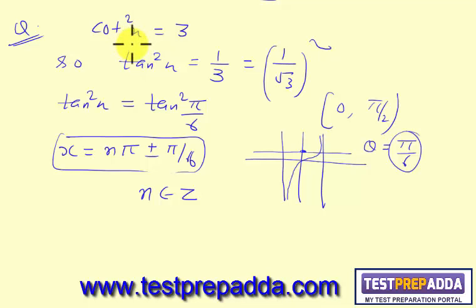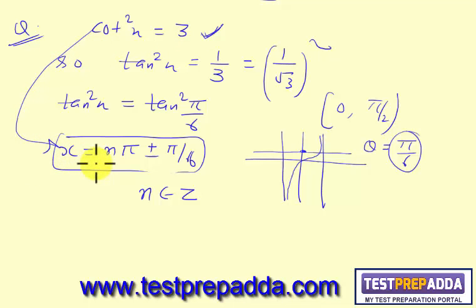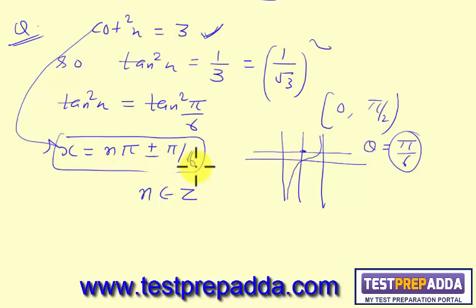So for the equation tan²x = 3, the general solution is x = nπ ± π/6, where n belongs to integers.